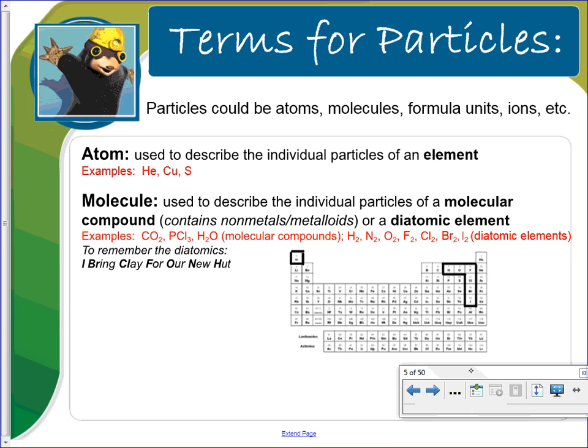Particles, what do we mean when we say 6.02 times 10 to the 23rd particles? Well, particles could be atoms, it could be molecules, it could be formula units, it could be ions. So when we talk about an atom, this is used to describe individual particles of an element, such as helium, copper, and sulfur.